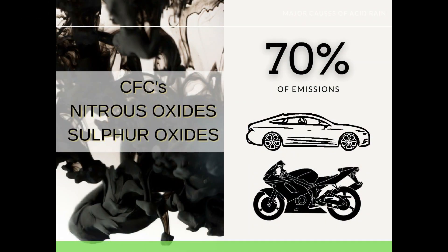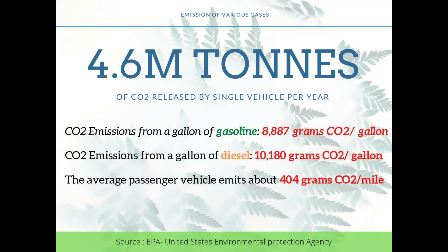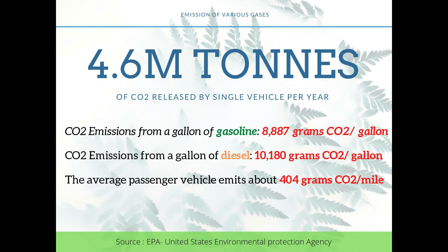In addition to carbon dioxide, automobiles produce methane and nitrous oxides from the tailpipe, and hydrofluorocarbon emissions from leaking air conditioners. The emissions of these gases are small in comparison to CO2; however, their impact can be important because they have a higher global warming potential than CO2. 4.6 metric tons — that is the amount of CO2 a typical passenger vehicle emits per year. This number can vary based on the vehicle's fuel economy and the number of miles driven per year. CO2 emissions from a gallon of gasoline give about 8,887 grams of CO2 per gallon, diesel gives more than 10,000 grams per gallon, and the average passenger vehicle emits about 404 grams of CO2 per mile — approximately half a kilogram of carbon dioxide every two kilometers.